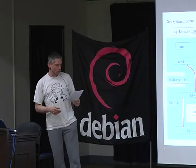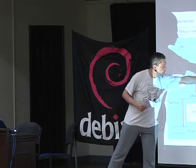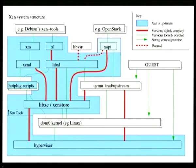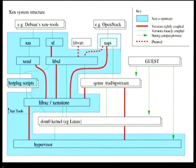Another important component of the traditional Xen system for which we're not upstream is QEMU. When we run unmodified guest operating systems, we need to provide them with something that looks like a PC — in particular, something that looks like a screen, a keyboard, an IDE controller, a network controller, and emulation of the underlying bus hardware like PCI and so forth. The QEMU project has been trying to provide this same thing in a different context for a long time, so it was an obvious choice for reuse.